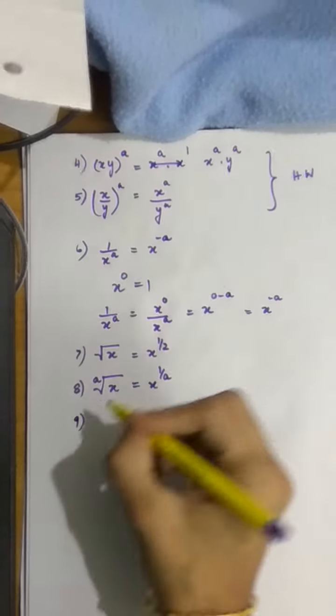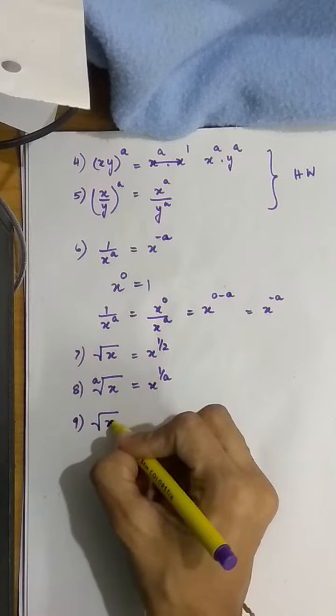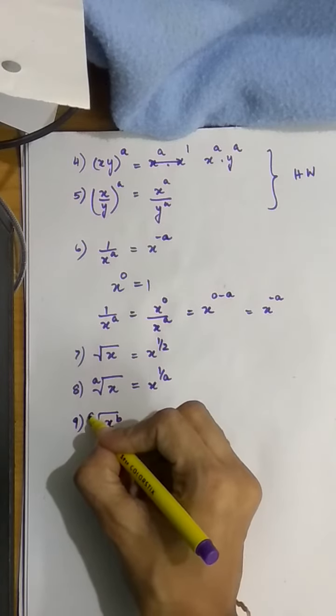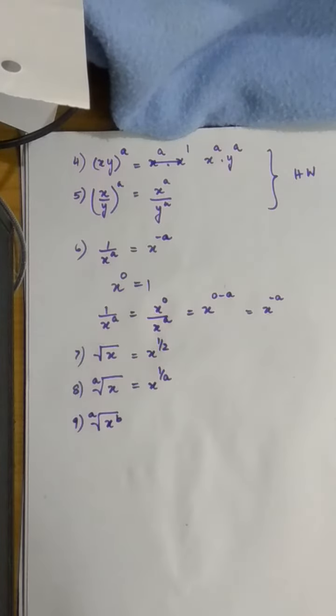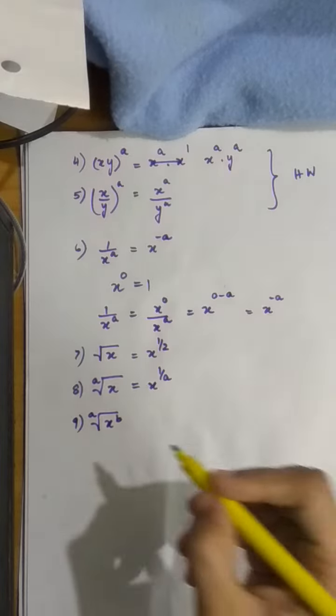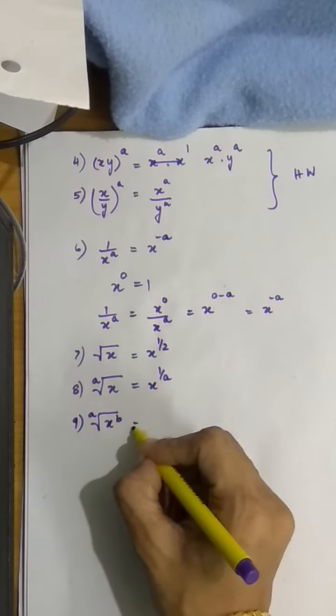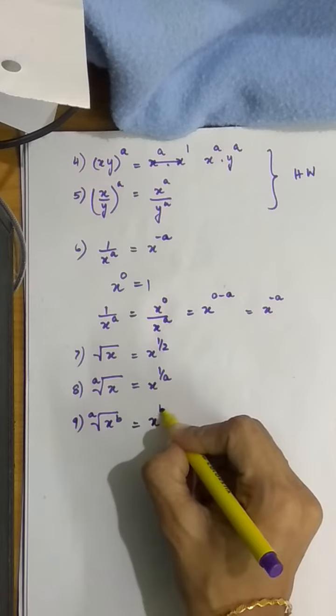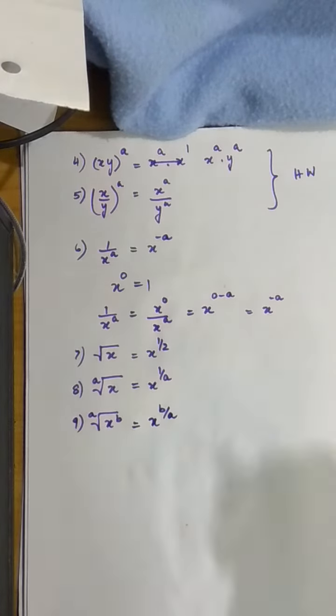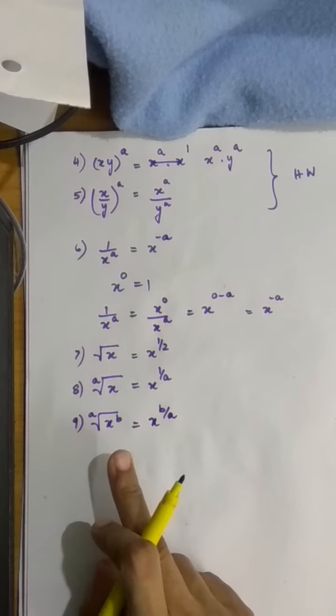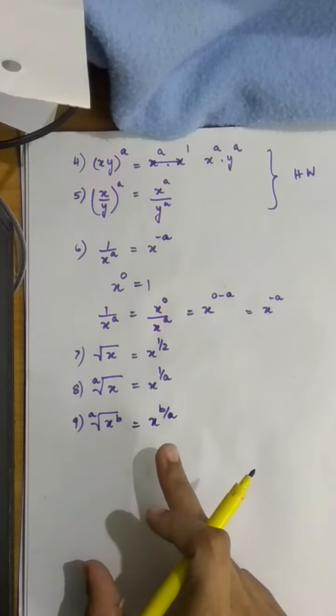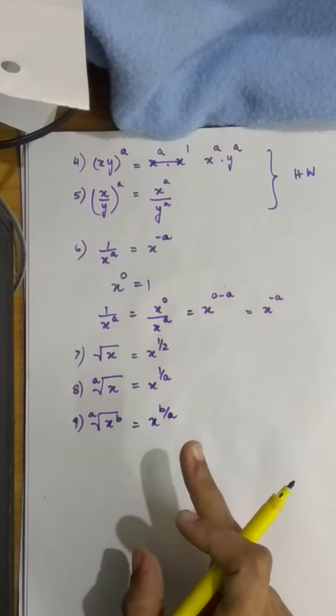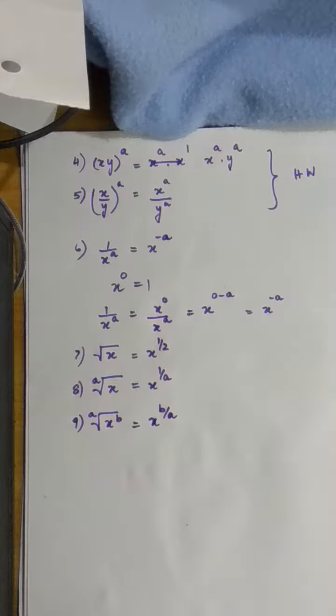Another proof question that often comes is this form. If you have the ath root of x to the power b, it is the same as saying x to the power b by a. Again, for two marks, this can come as a proof question.